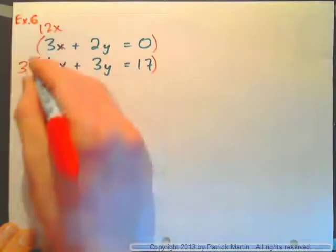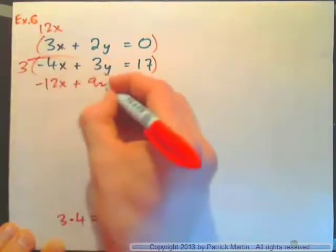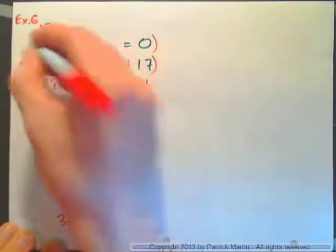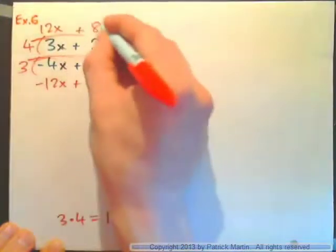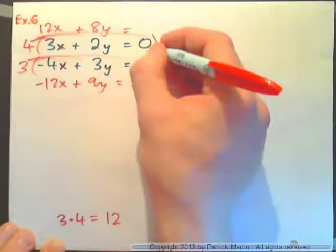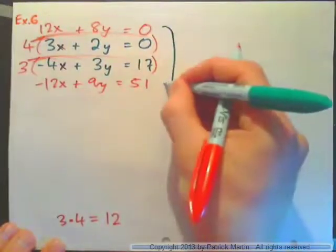3 times this equation gives the negative 12x plus 9y, and 3 times 17 equals 51. And 4 times this equation gives you 12x plus 8y equals 4 times 0. What's 4 times 0? 0, isn't it? And then add these equations together.